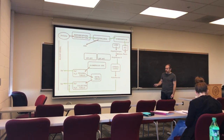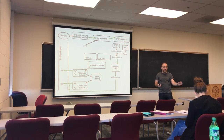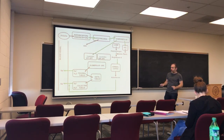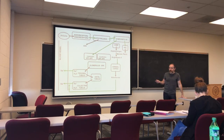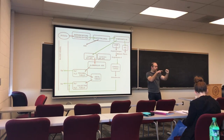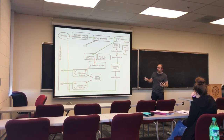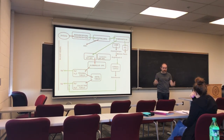Angiotensin 2 stimulates the adrenal cortex to secrete aldosterone. Aldosterone stimulates the activity of the sodium-potassium ATPase in the cells forming the walls of the nephron tubules, pumping sodium from inside the tubule to the blood vessels, with water following the sodium. The sympathetic nervous system also constricts the afferent arteriole, decreasing the glomerular filtration rate, so less blood is filtered — conserving blood volume.